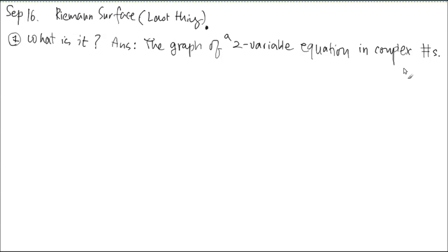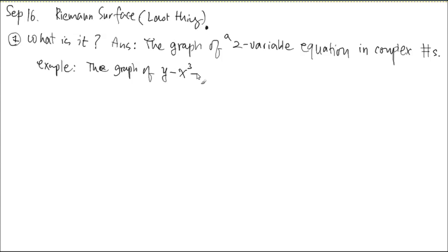First, let me give you the real-number version as an example. The graph of a two-variable equation — for example, y minus x cubed plus x equals zero. That's a two-variable equation in real numbers. There's an equation and there's a graph. The command in Mathematica is the contour plot, which will sketch this graph. This is a very special graph because you can easily isolate y.